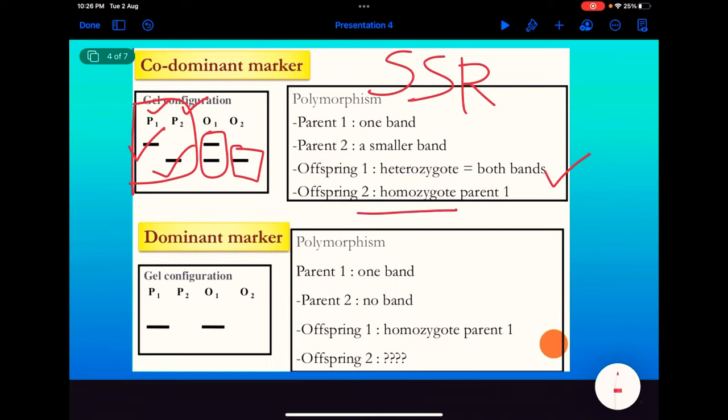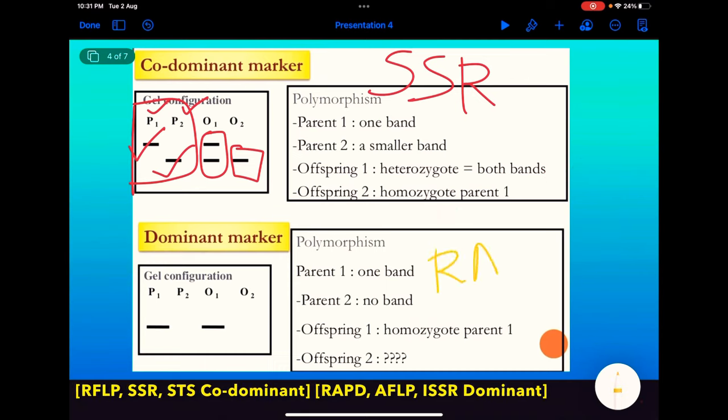In case of a dominant marker, for example RAPD, that is random amplified polymorphic DNA, it is either present or absent. Only a single allele is expressed.